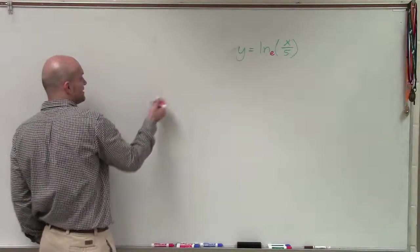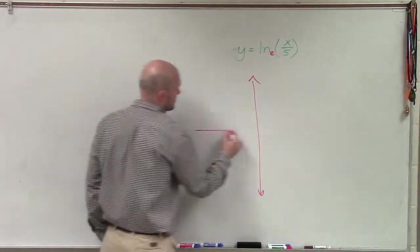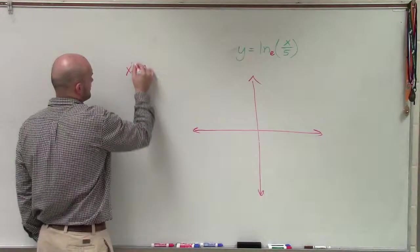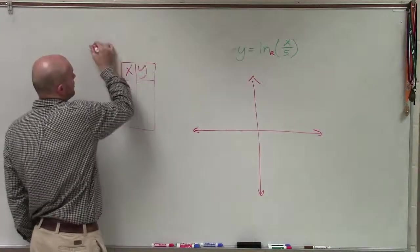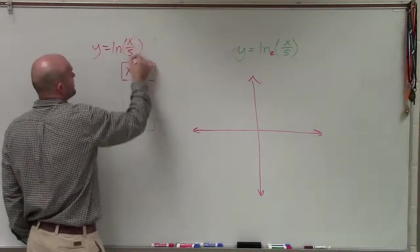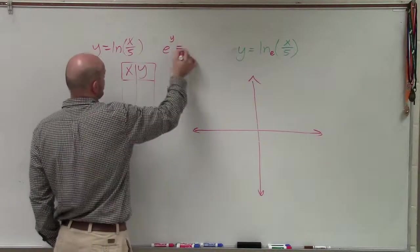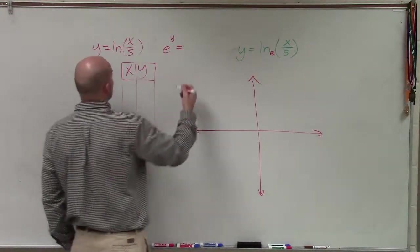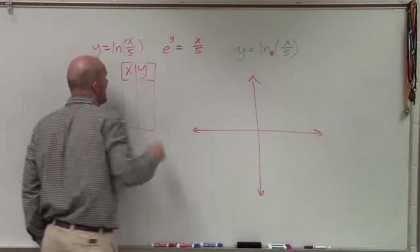So if I was going to graph this, what I would do is I'd just set up an xy coordinate and then I'd set up an xy table. Now just like I've done for my other problems, I am going to take my parent graph, y equals ln of x to the fifth, and I'm going to rewrite it in exponential form. So there would be e to the y equals x over 5.